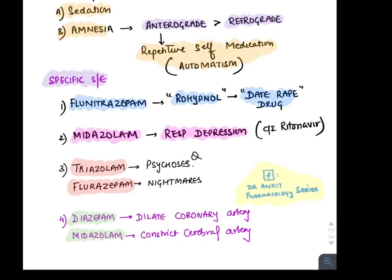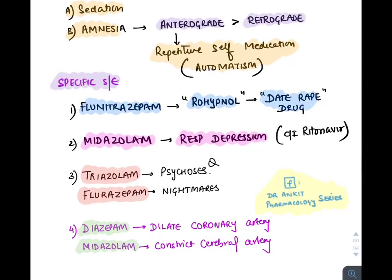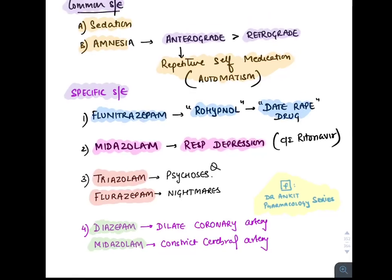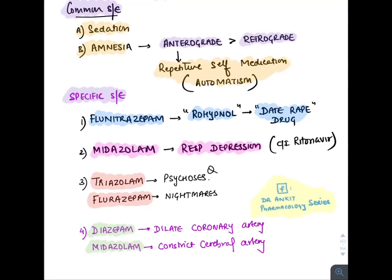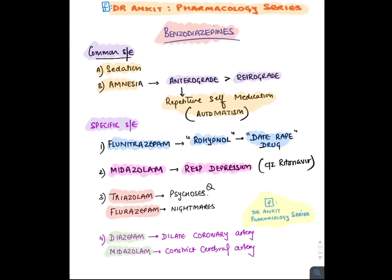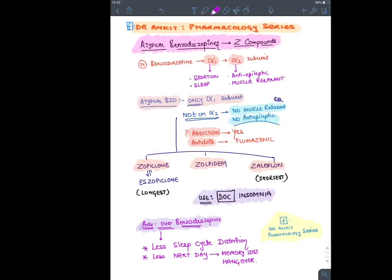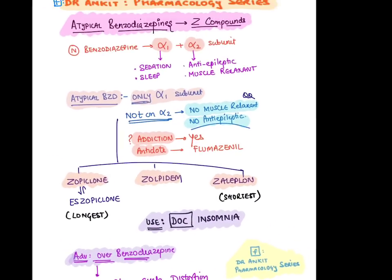Flunitrazepam (Rohypnol) is a colorless, odorless, and tasteless benzodiazepine used as a 'date rape' drug — it is banned. Midazolam causes maximum respiratory depression and should not be combined with CYP inhibitors like ritonavir. Triazolam causes psychosis, flurazepam causes nightmares, diazepam dilates coronary arteries, and midazolam constricts cerebral arteries.